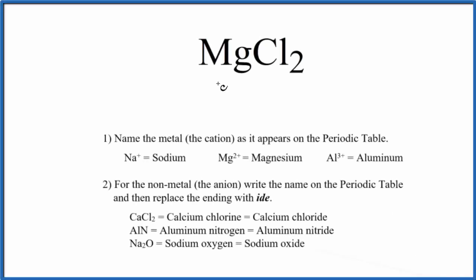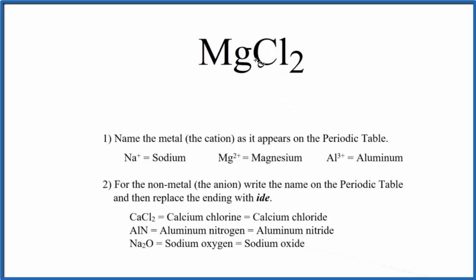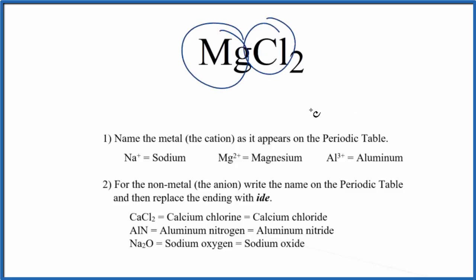To write the name for MgCl2, we first need to recognize that this is an ionic compound. That's because we have a metal bonded to a non-metal — metal non-metal, that's ionic. And specifically, this is a binary ionic compound, because we have only two different elements bonded together.